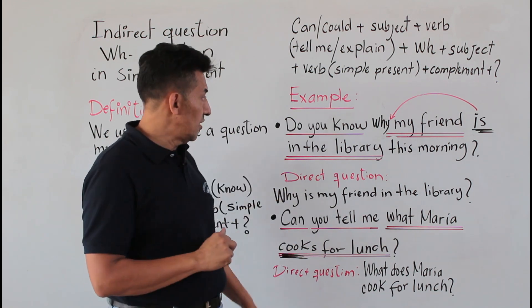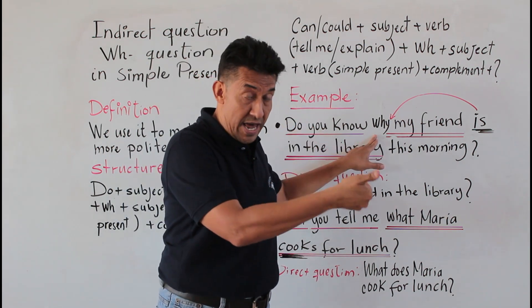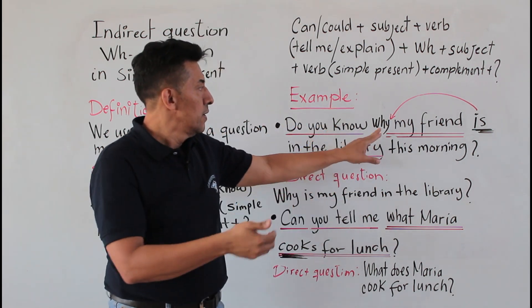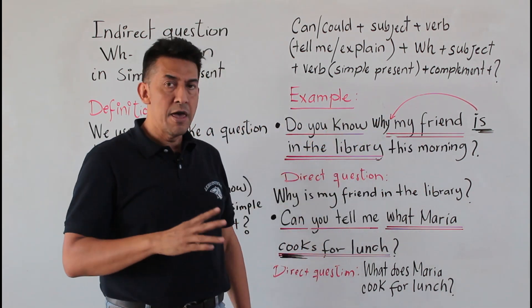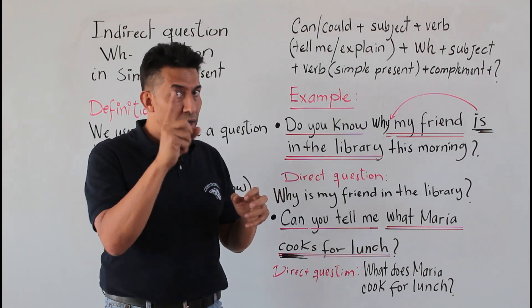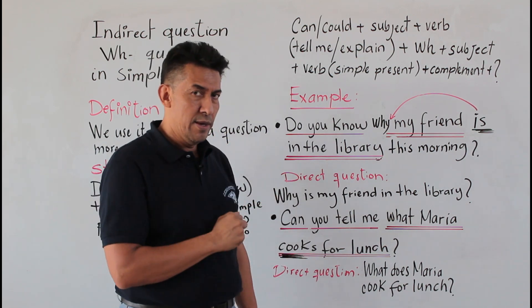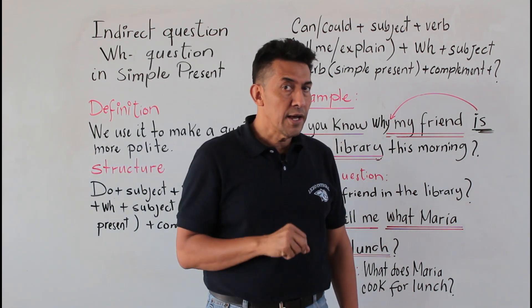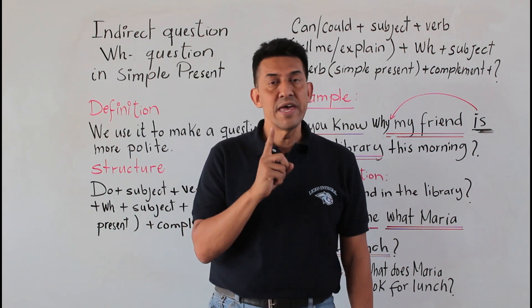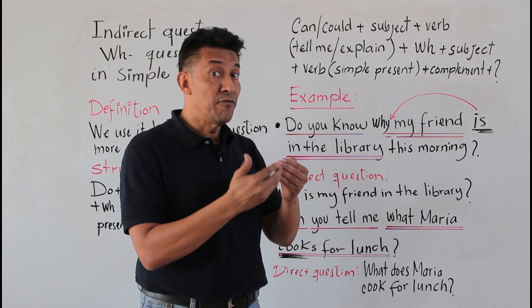Let's take a look at the first example. It says, 'Do you know why my friend is in the library this morning?' It's a long question. Let's repeat that question again: 'Do you know why my friend is in the library this morning?' That is the indirect question, the more polite form.